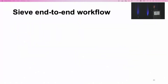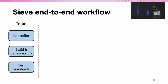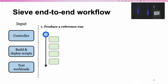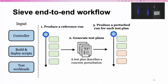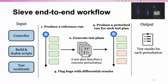Now let's put everything together and see the whole picture of how SIEVE works. SIEVE takes three inputs: first, the controller source code; second, the build and deploy script for the controller; and third, the test workload such as downscaling a Cassandra cluster. SIEVE first instruments the state-centric interface used by the controller, deploys it, and runs the test workload to produce a reference run. From this reference run, SIEVE generates many test plans, each describing a concrete perturbation. For each test plan, SIEVE produces a perturbation run by injecting faults accordingly, uses differential oracles to compare the two runs, and outputs a list of test results. Once a bug is triggered, the user can easily reproduce it by rerunning the same test plan.